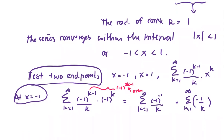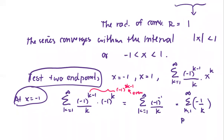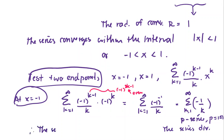This turns out to be the p-series with p equals one. By the p-series test, if p is less than or equal to one the series diverges, so the series diverges at x equals negative one by the p-series test.